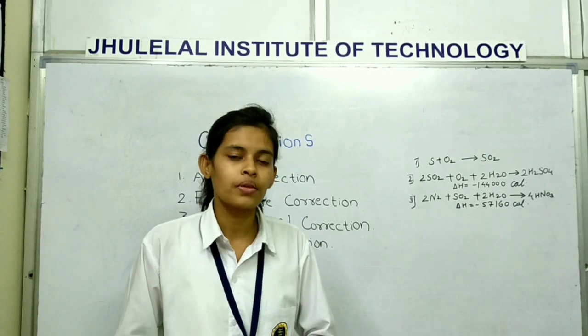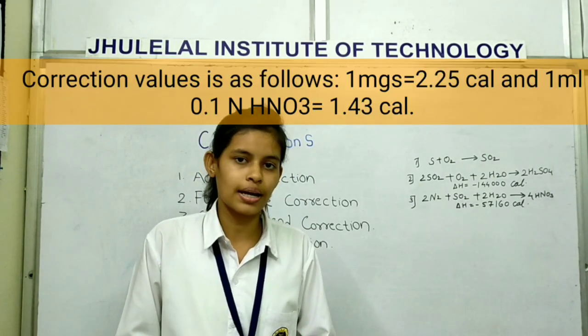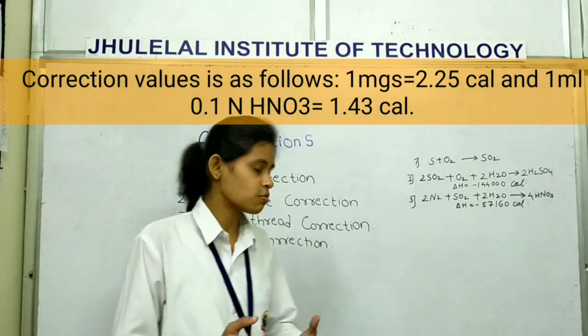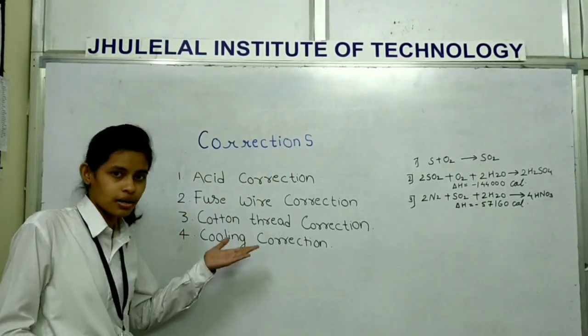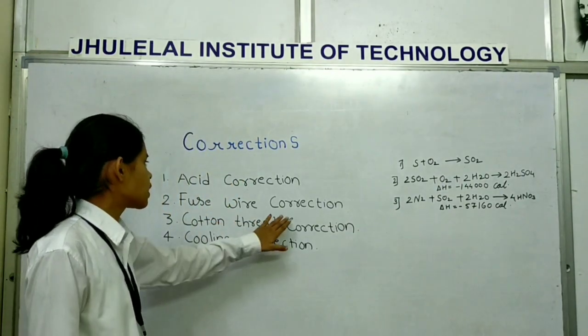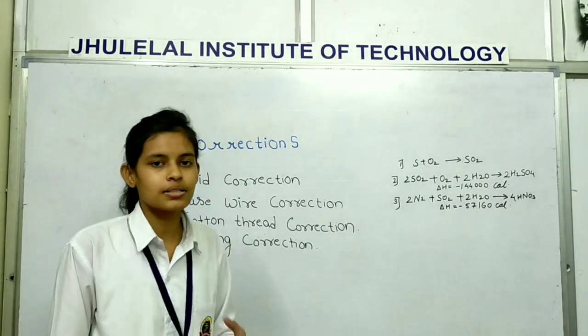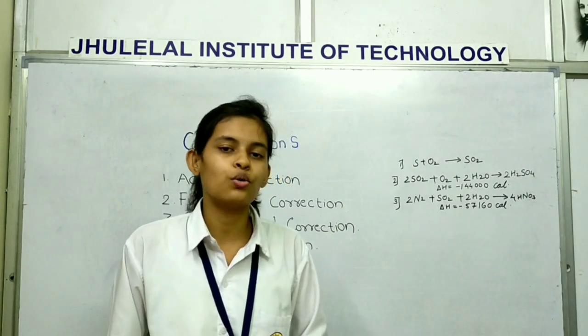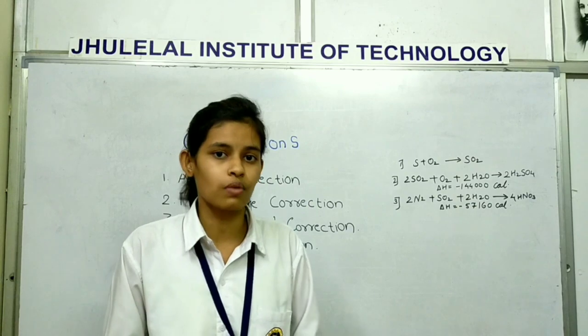So heat liberated in bomb formation of nitric acid and sulphuric acid are subtracted. Now we see the Fuse Wire correction. The correction of Fuse Wire is done by subtracting heat liberated in calories due to combustion of Fuse Wire.